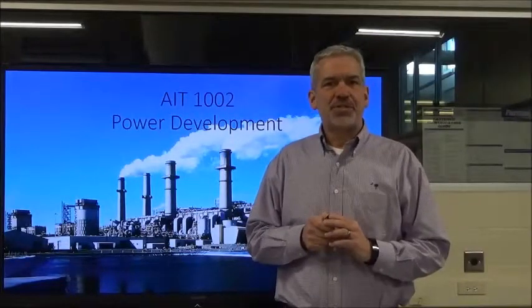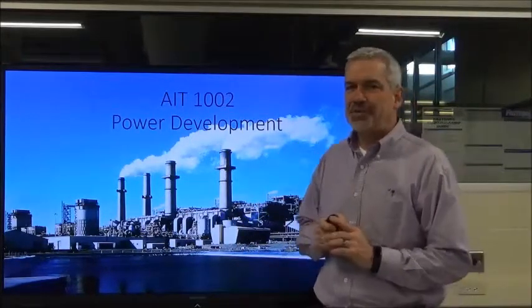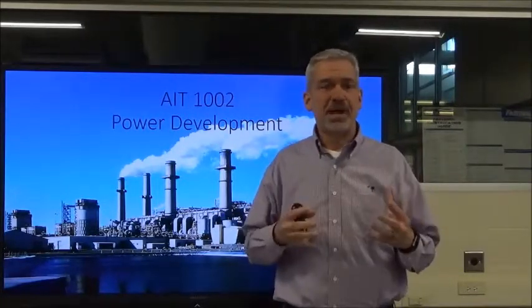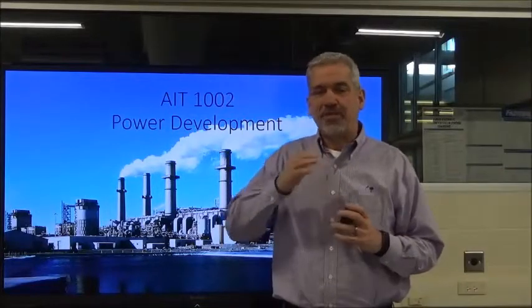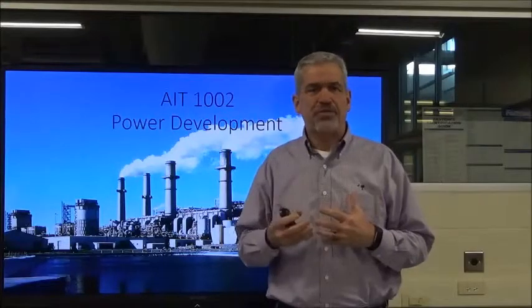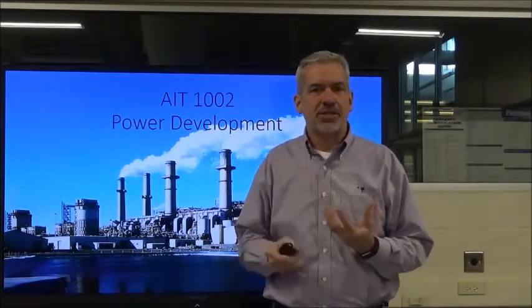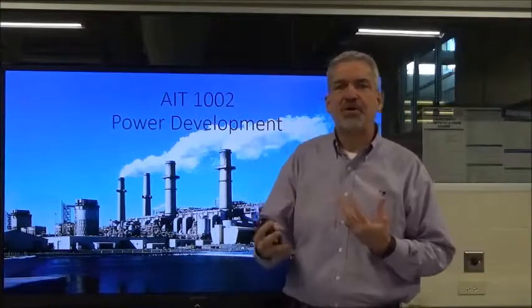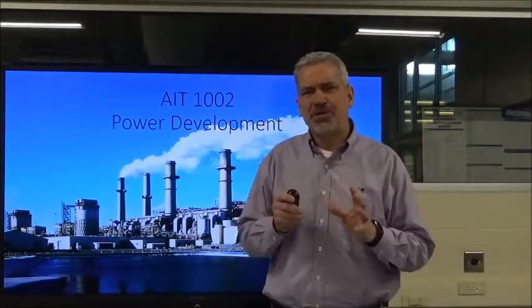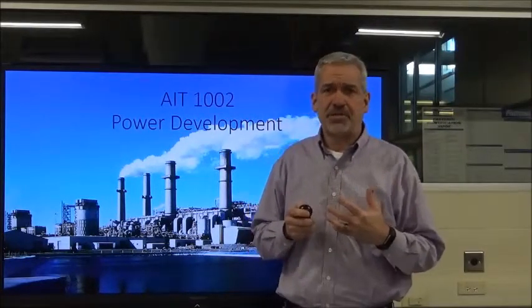Hey everybody, welcome back to AIT 1002 for yet another installment of Alternators. So far we've talked about feeding our power grid with our alternators from the power plants and how we are feeding it AC voltage. We've talked about sine waves and creating voltage by spinning our rotor inside our stator coils to get an output voltage. Now I want to talk about how much voltage we're producing coming out of these alternators and supplying to us.